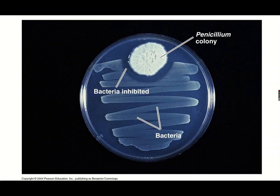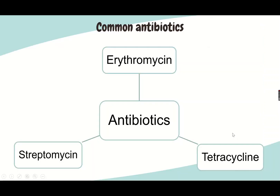The image shown here depicts bacteria growing in a petri dish. On one side, Penicillium has contaminated the petri dish. In the surrounding area of the Penicillium, chemicals it has secreted are not allowing the bacteria to grow — these chemicals are the antibiotic. Some other common antibiotics are erythromycin, streptomycin, and tetracycline.